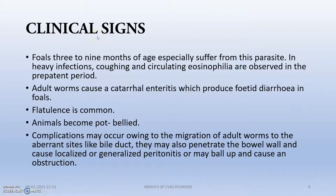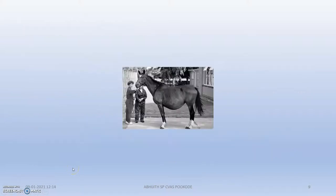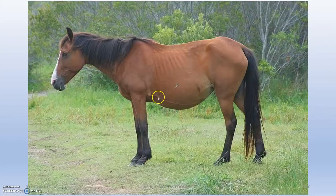Clinical signs appear in foals three to nine months of age. Flatulence and pot-bellied appearance are very common. Bowel movement problems occur and there is generalized peritonitis due to obstruction of the intestine. You can see this is actually the pot-bellied appearance.